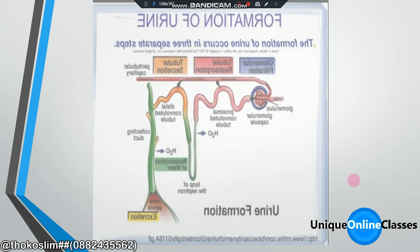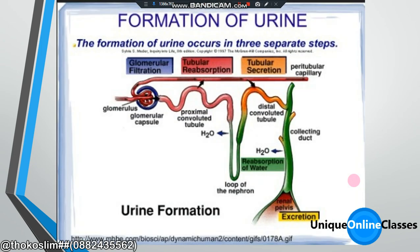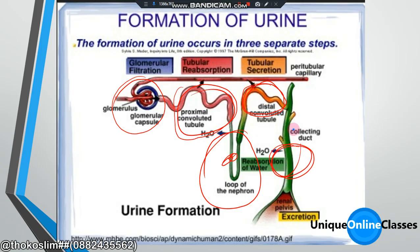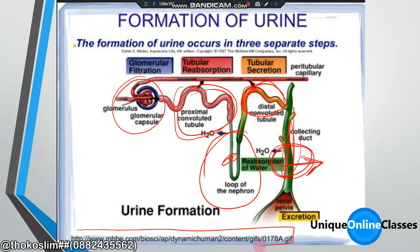Moving forward, we have a diagram showing the full process: glomerular filtration, tubular absorption — which is the selective absorption — tubular secretion, and the loop of Henle, which is the absorption of water. You can find this diagram in the video.